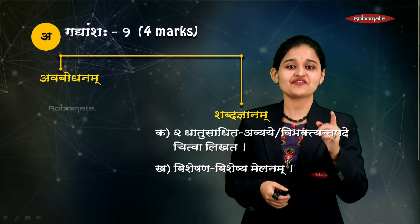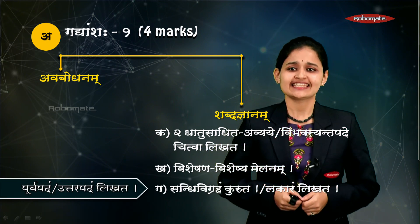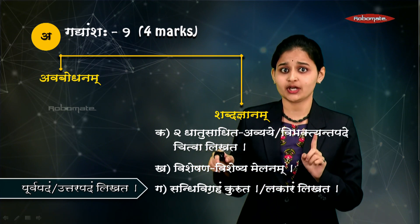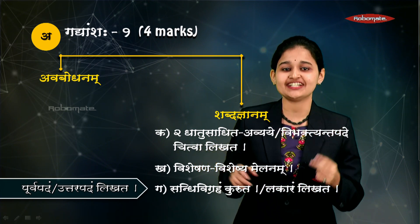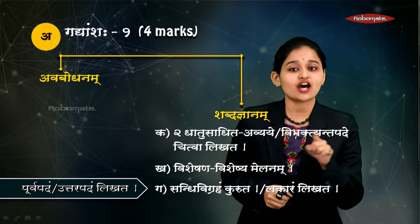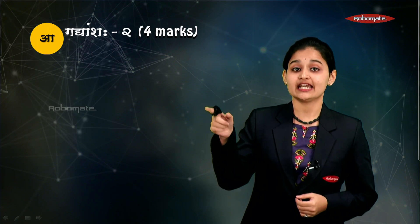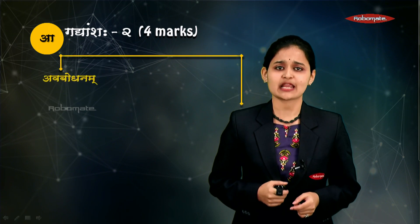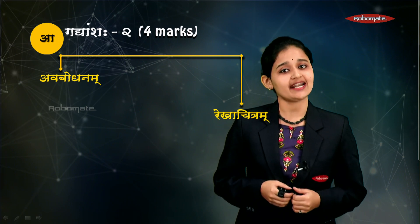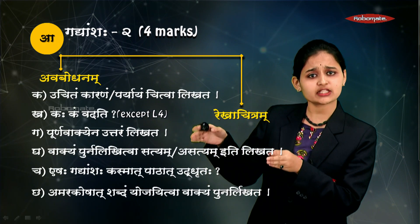In the second paragraph, that is Gadyang Shaha Dvitiyam, there are different activities. The first could be urvapadam (first word), uttrapadam (second word), chayanam (selection of the word), or chaturthapadam (analogy between words). This second paragraph also has avabodhanam, which is comprehension for two marks, and it is completely the same as in Prathamaha Gadyang Shaha.